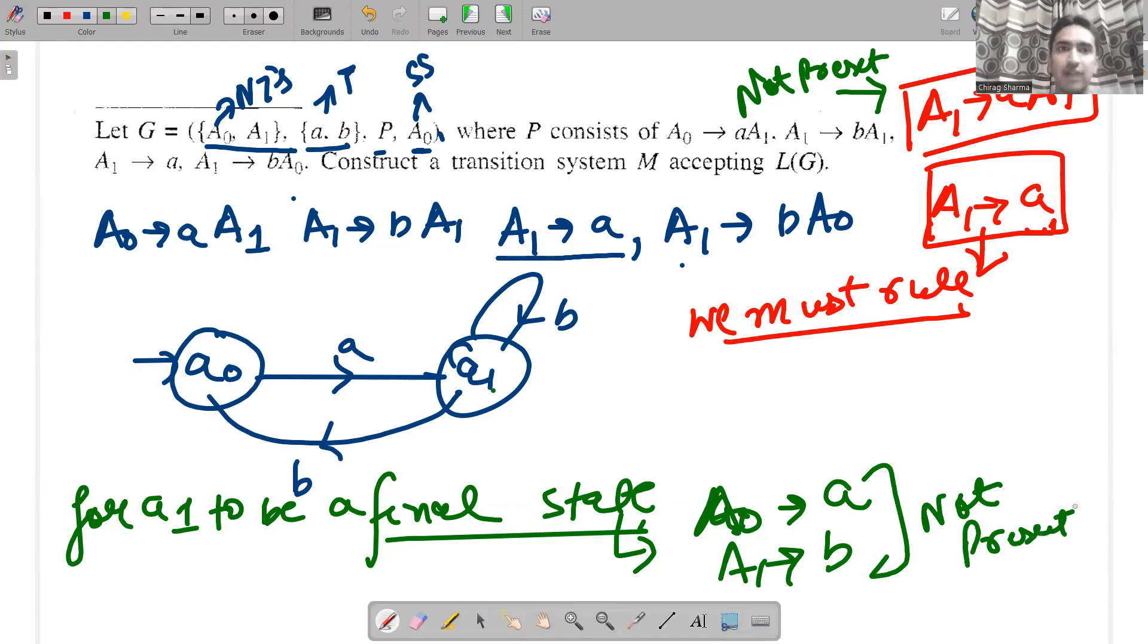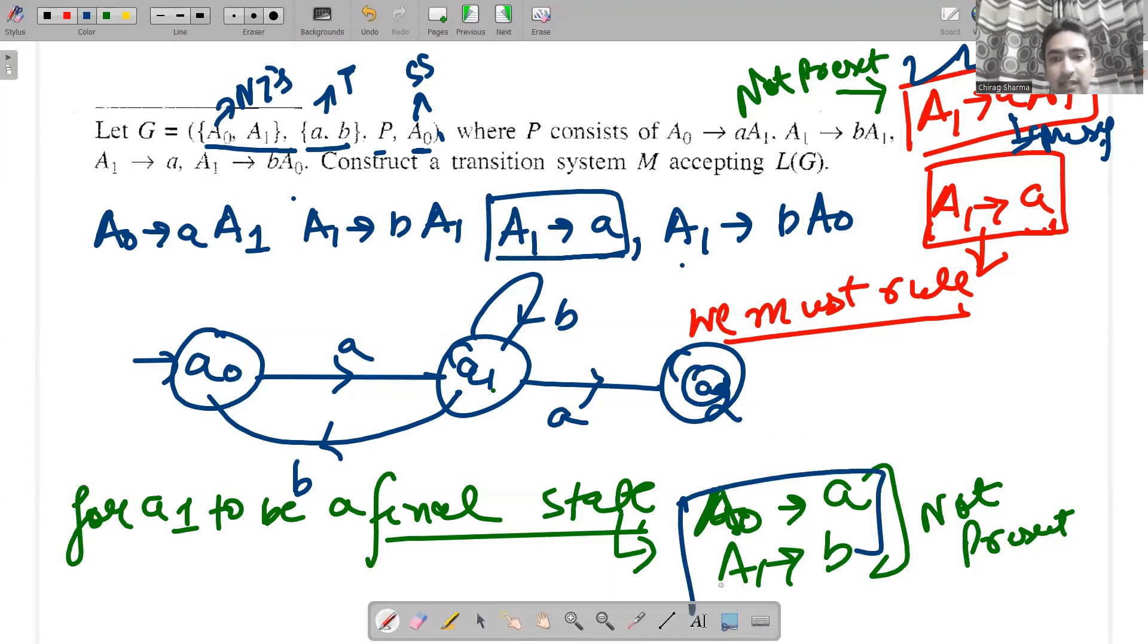So there is only one way: since you have written A1 given A goes to final state, rather construct another state and make it final. Why? Because these rules are missing. The rules that would make A1 a final state are missing. So these rules are not there, and clearly this should be your final transition system.